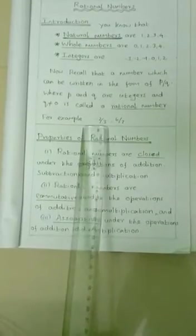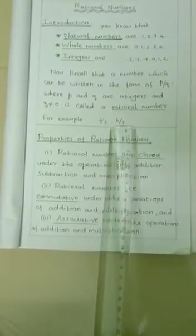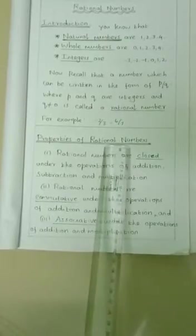For example, -2/3, 6/7. Next, properties of rational numbers.